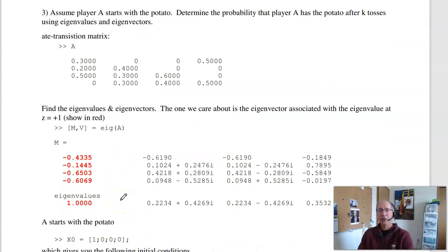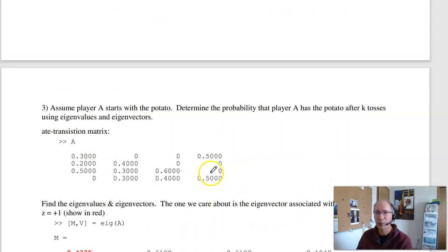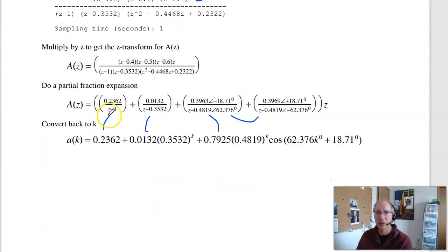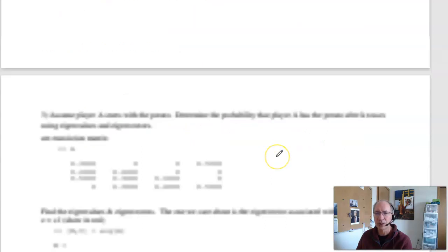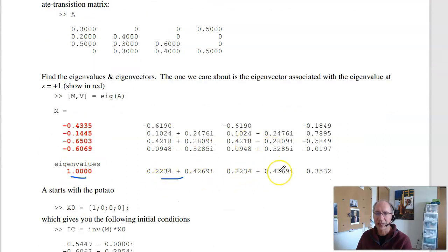A third way to solve is using eigenvalues and eigenvectors. The A matrix is a 4x4 system. It's got eigenvalues, it has eigenvectors. Find the eigenvalues. Note that the eigenvalues are the poles. These are the roots. There's one at 1, 0.35, 0.44 plus or minus j 0.32. Eigenvalues of A, exact same answer.